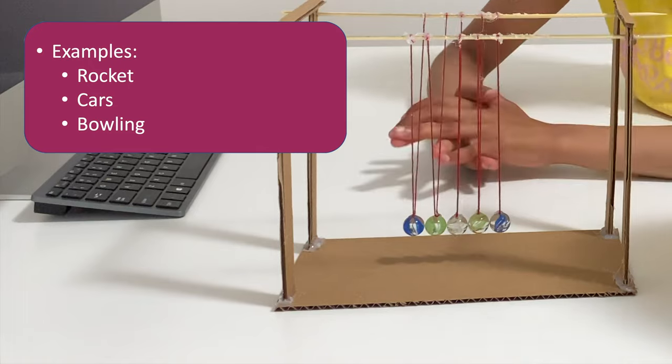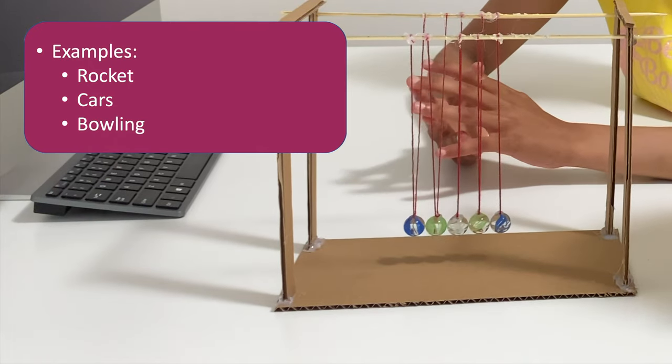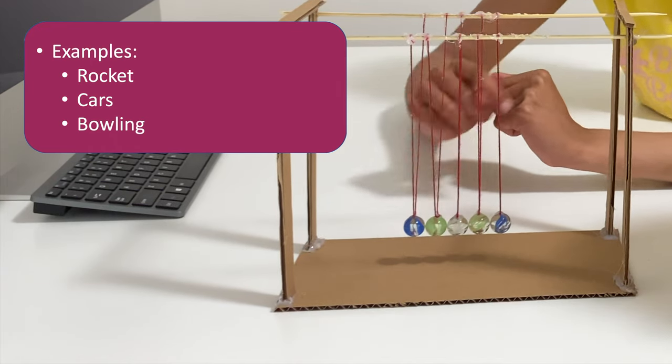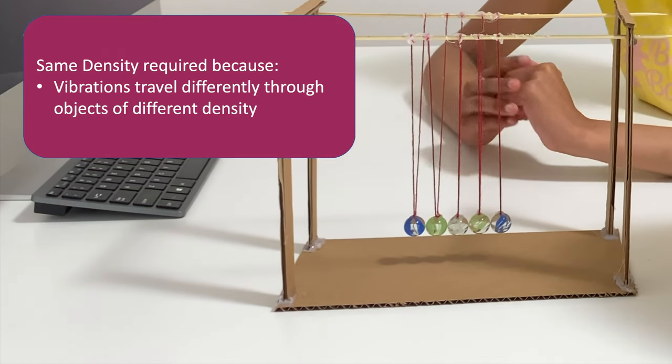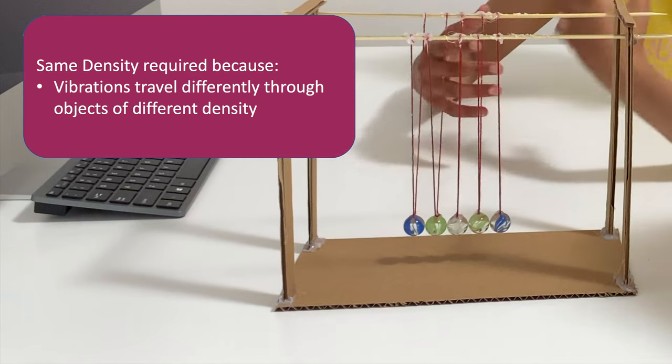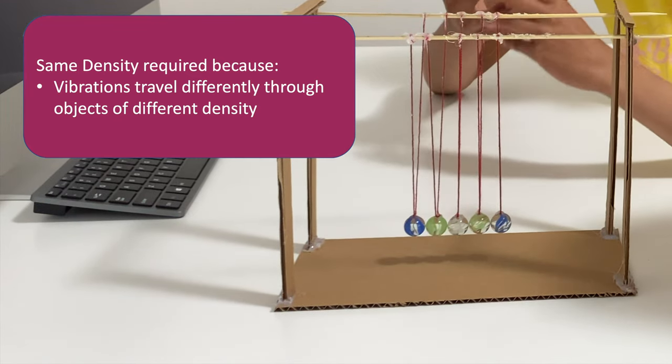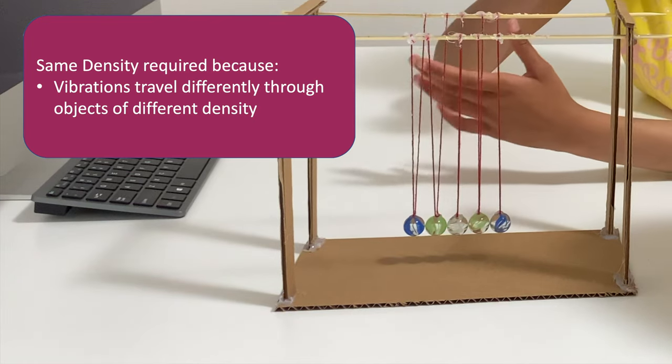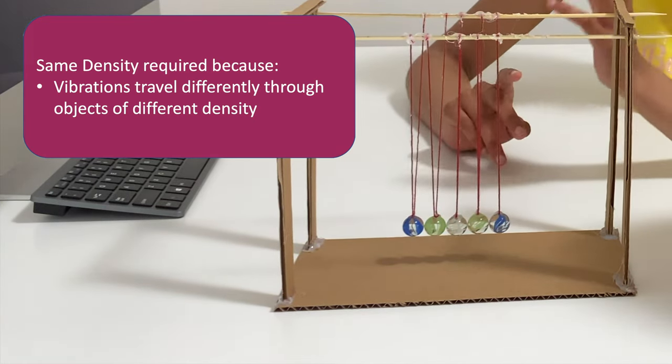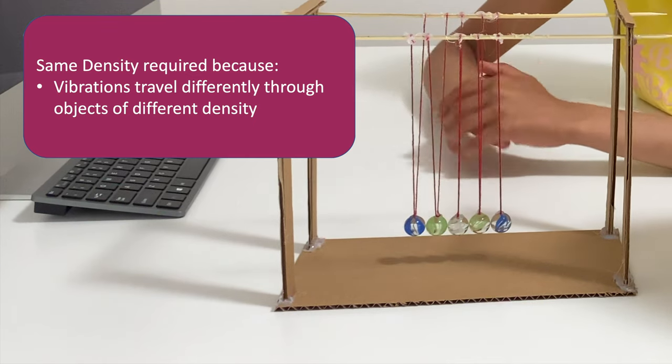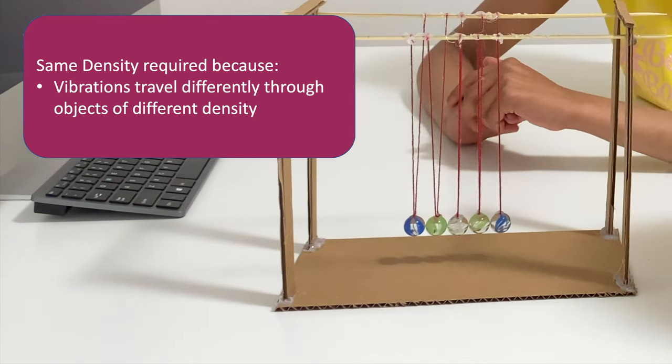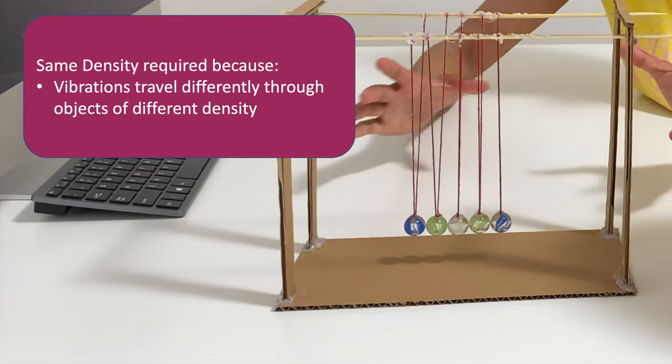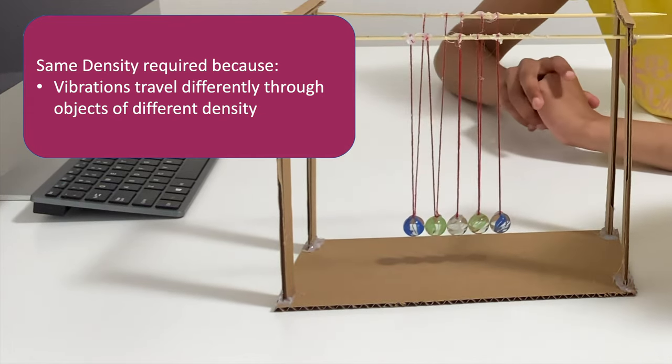So that is how this Newton's Cradle works. And there are so many other reasons why this Newton's Cradle works. For example, the balls in the Newton's Cradle have to be to work ideally. They ideally have to be the same size, mass, weight, density, because especially density. Why? Because vibrations of energy and momentum travel differently through objects of different density. So this is the science behind the Newton's Cradle. And it is very, very interesting. It is an amazing experiment, amazing science project because it has so much to learn from it.